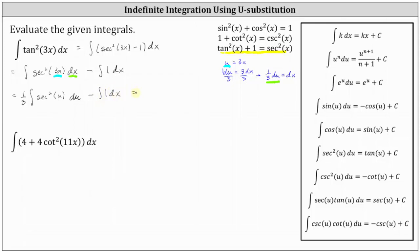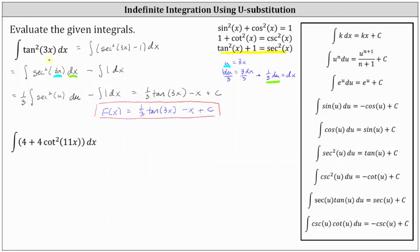Now we integrate the first integral with respect to u and write it back in terms of x, then integrate the second integral with respect to x. One third times the integral of secant squared u du is equal to one third times tangent u plus c. Since u is 3x, this is one third times tangent 3x. Then minus the integral of one dx equals minus x, giving us plus c at the end. So the antiderivative is one third tangent 3x minus x plus c.